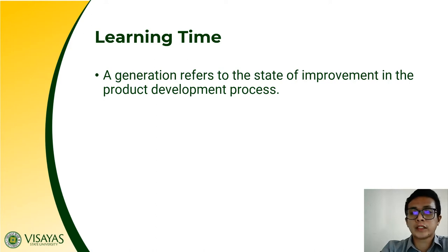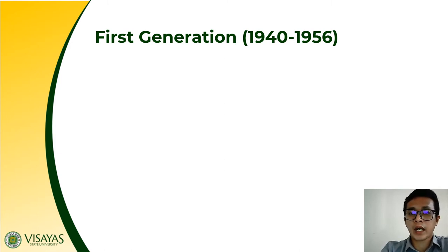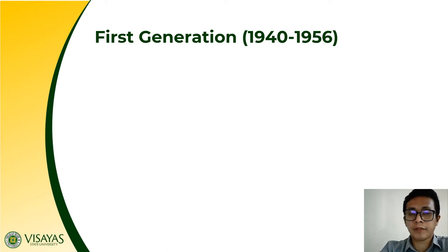Each generation comes with a new improvement or development of the computer. These computers are now classified as first generation, second, third, fourth, and up to the present — the fifth generation computers. But before going to the fifth generation, let us first understand the characteristics of each forerunner generation, which are the first, second, third, and fourth generation.